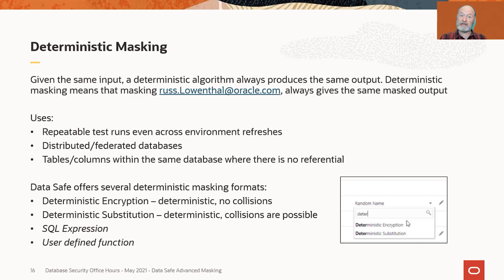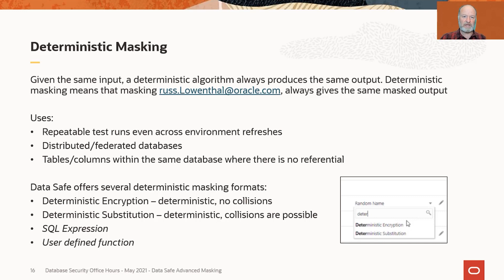With substitution, your lookup table should always have at least twice as many rows as the table you're masking. With deterministic encryption, the same input always produces the same output, and that output is guaranteed to be unique — no two inputs should produce the same output. So rust.lowenthal and lowenthal.rust would never produce the same encrypted output. With substitution, the same input always produces the same output, but two different input values might collide and produce the same output. Use deterministic encryption when you need both determinism and guaranteed uniqueness; use deterministic substitution when you need determinism but don't care about duplicate values.